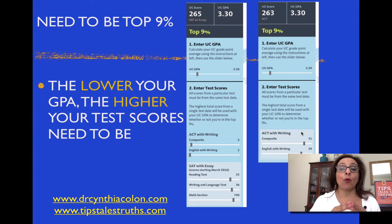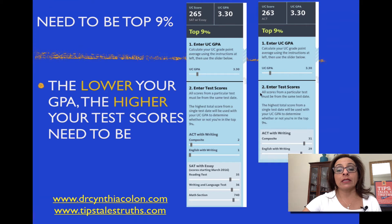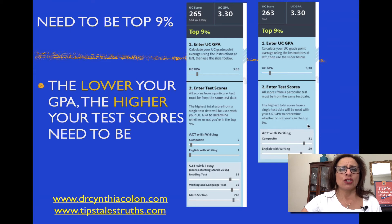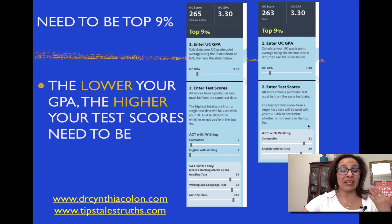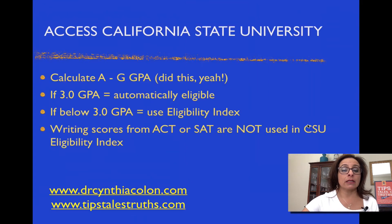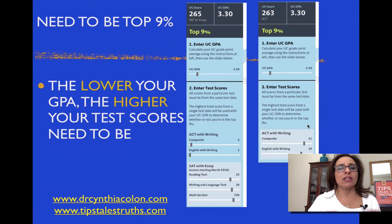When I did this for a 3.3 GPA, I had to get these numbers for the SAT and these numbers for the ACT. I just wanted to point that out and give you some examples so you can get a sense of what that means.